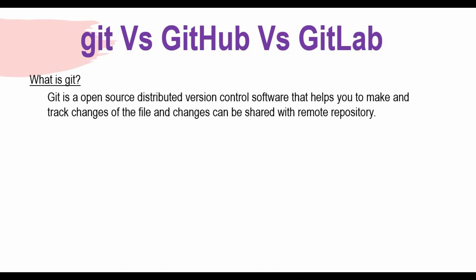Git is an open source distributed version control software. Git is used because it helps you to track changes on a file, and those changes can be stored in a remote repository. In software development, if you want to track who changed what, what was changed, and when it was changed, Git is the best option for that. It is a very popular version control tool.